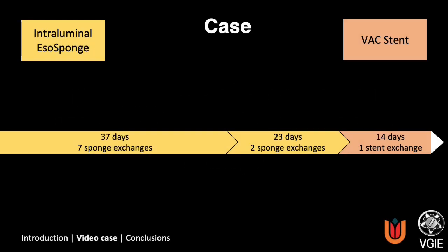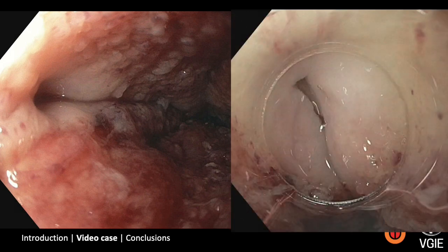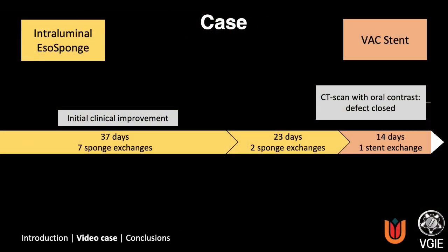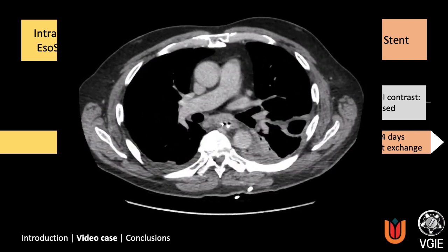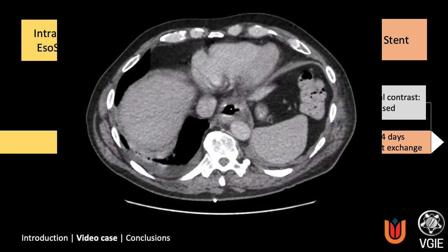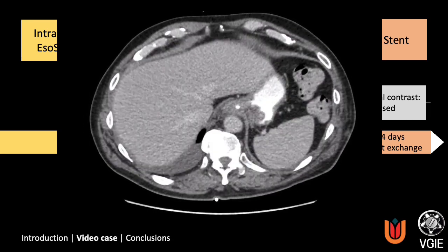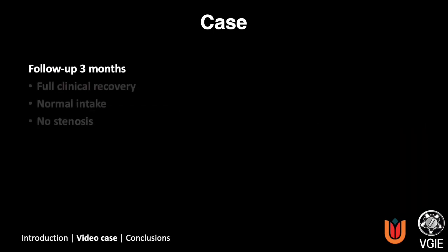Upon removal after 1 week, after a total of 2 weeks with the VaxStent, the defect appeared to be closed. This was confirmed by a CT scan with oral contrast. Three days after removal of the VaxStent and after 2.5 months of hospitalization, the patient was discharged. At 3 months follow-up, the patient was doing well, had normal intake, and there were no signs of stenosis.